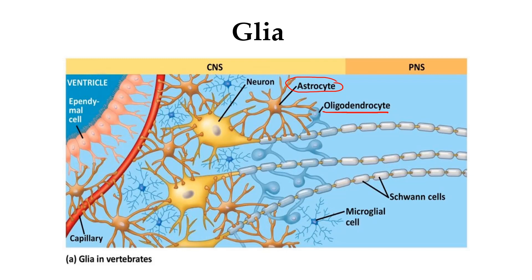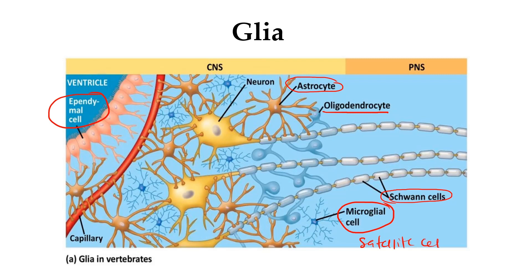Third are microglial cells, which are brain immune cells that function to protect against injury and disease. Fourth are ependymal cells, which line the spinal cord and ventricles and help create cerebrospinal fluid. In the PNS, there are two types of glial cells: Schwann cells, which form the myelin sheath in the PNS, and satellite cells, which perform a similar function to astrocytes.